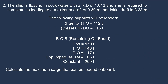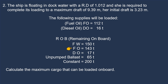Let us proceed to our next example. The ship is floating in dock water with a relative density of 1.012, and she is required to complete loading to a maximum draft of 9.39 m; her initial draft is 3.23 m. The following will also be loaded on board: fuel oil 112 tons and diesel oil 16 tons. The ROB (remaining on board) are: fresh water 150 tons, fuel oil 143 tons, diesel oil 17 tons, unpumped ballast 65 tons, and constant 200 tons. Calculate the maximum cargo that can be loaded on board.